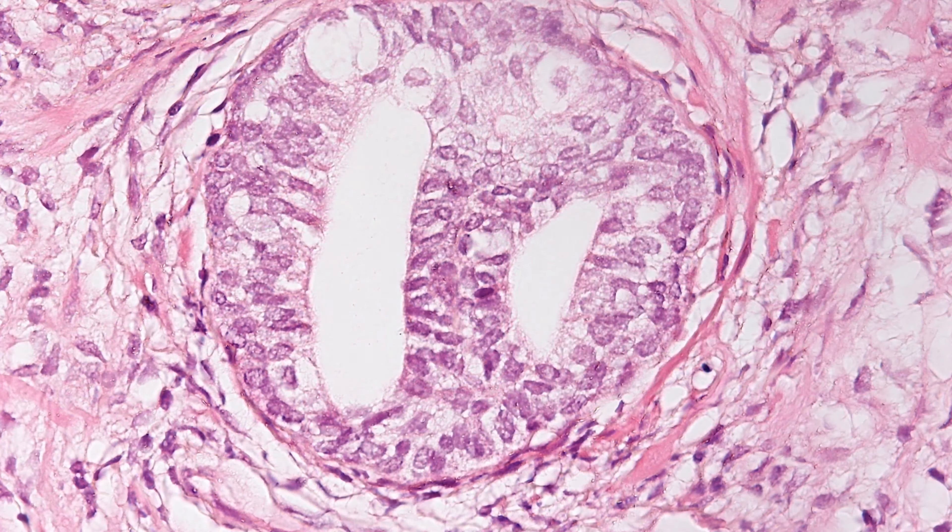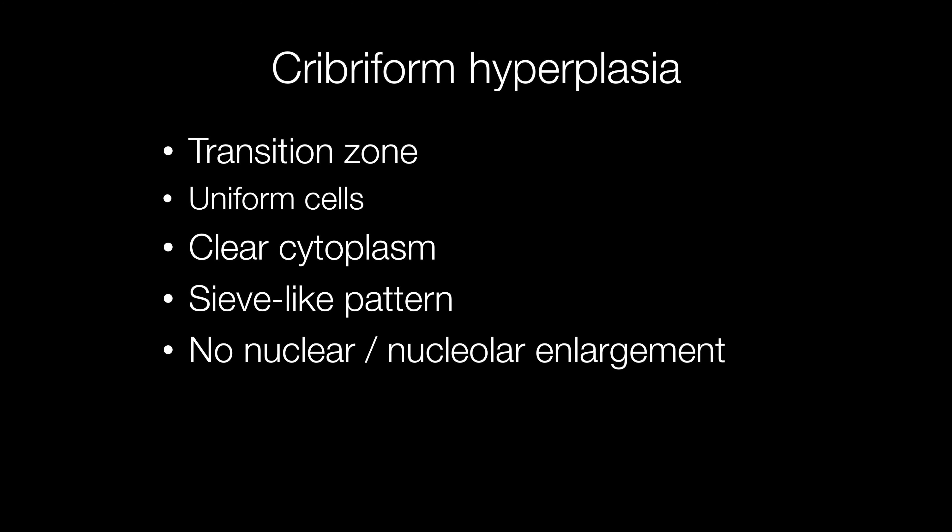The third case was a male of 87 who had a TURP with no other clinical details available. This is an example of cribriform hyperplasia, which occurs in the transition zone. It is composed of uniform cells with clear cytoplasm arranged in a sieve-like pattern, and there is no nuclear or nucleolar enlargement.